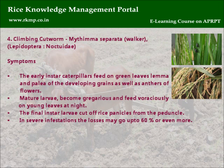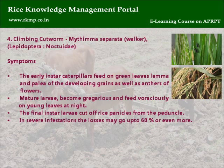Climbing Cutworm: Mythimna separata Walker, Order Lepidoptera, Family Noctuidae. Symptoms: Early instar caterpillars feed on green leaves, lemma and palea of developing grains, as well as anthers and flowers. Mature larvae become gregarious and feed voraciously on young leaves at night. The final instar larvae cut off rice panicles from the peduncle. In severe infestations, losses may reach 60% or more.